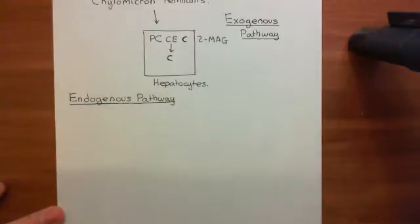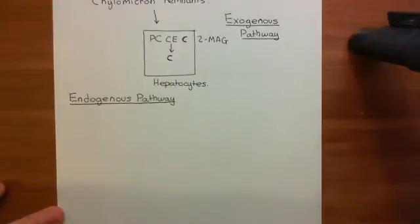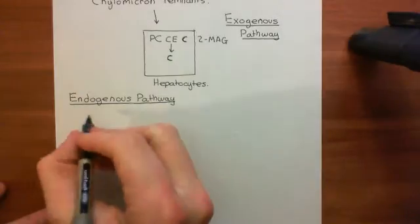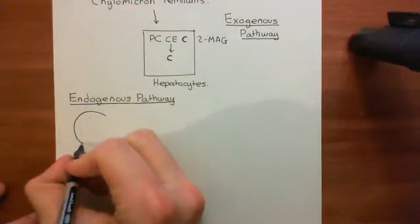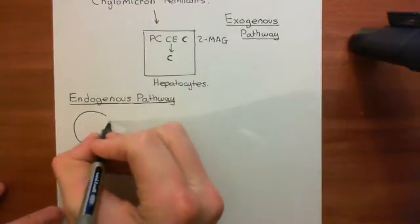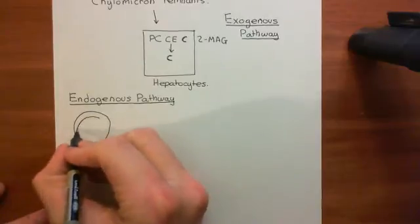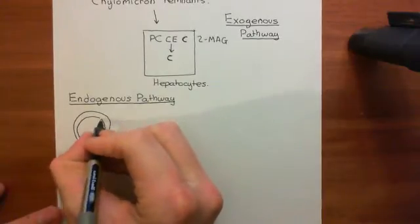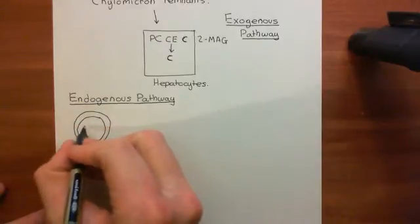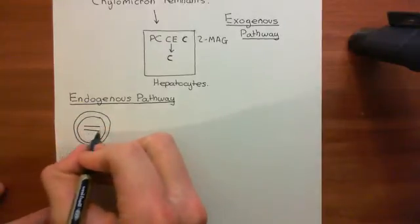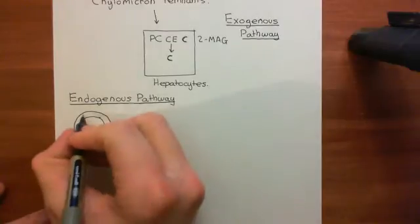Fundamentally, where are we going to get lipid molecules from? We have to get them from the adipocytes. In the fed state, we have been supplying the adipocytes with lipid molecules to bump up their stores, so now what we're going to do is take them out again. Basically, what happens is the endogenous pathway starts with the adipocytes — certain hormones can stimulate the adipocytes to start breaking down their triacylglycerols, which they store within this massive lipid store in the center, into free fatty acids.